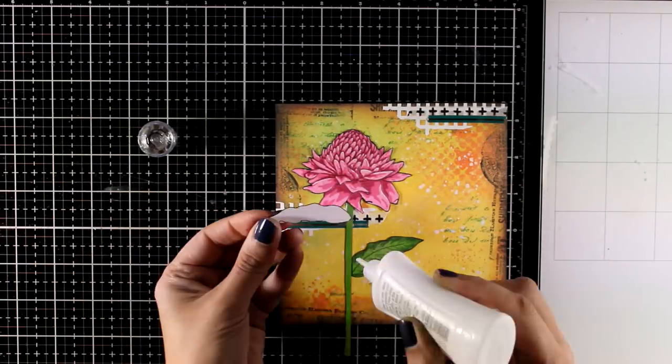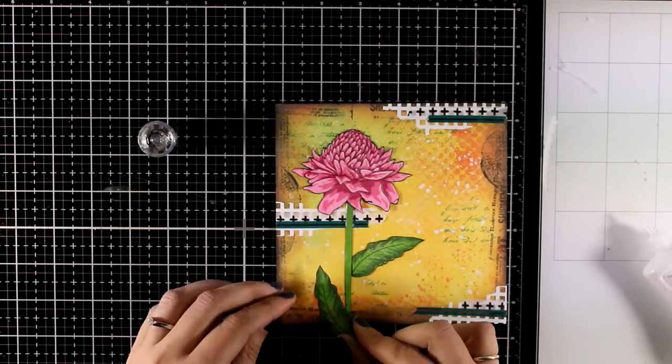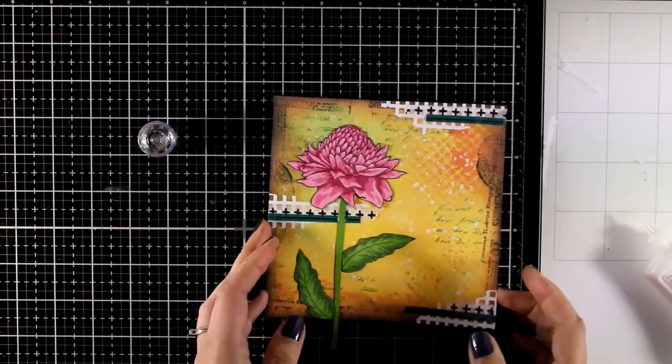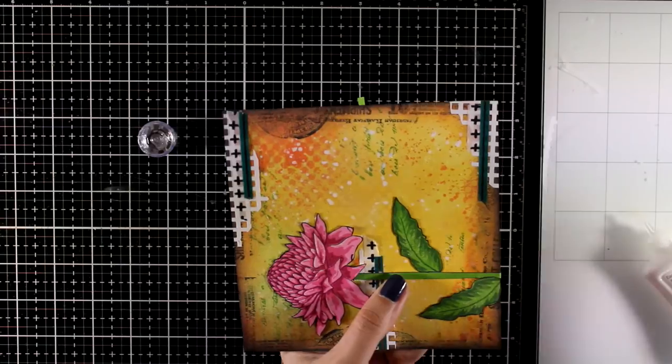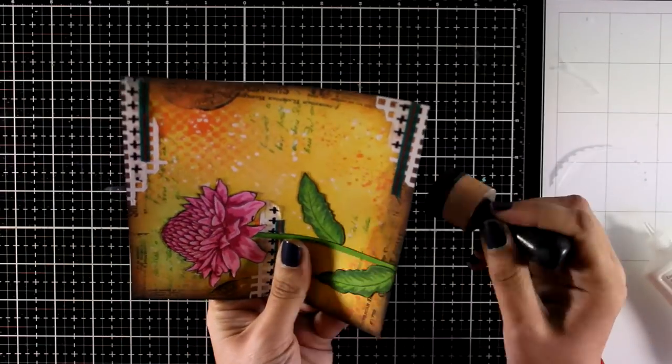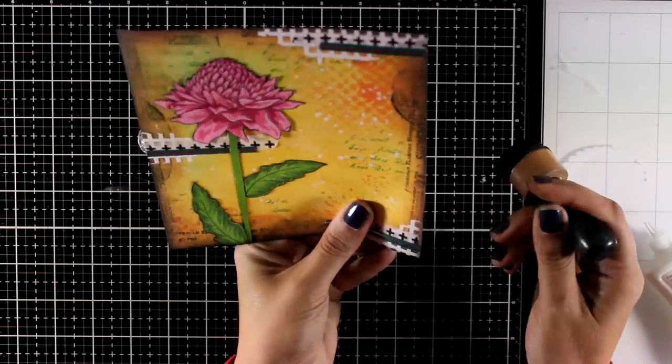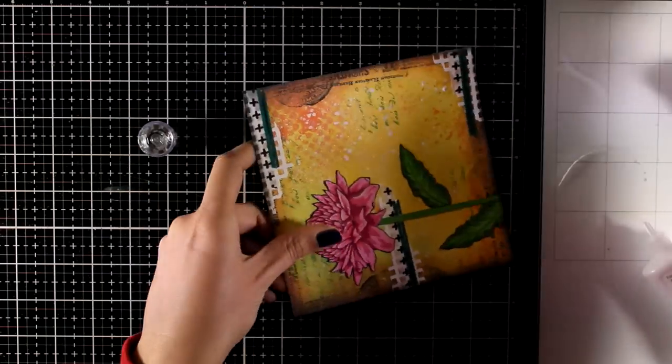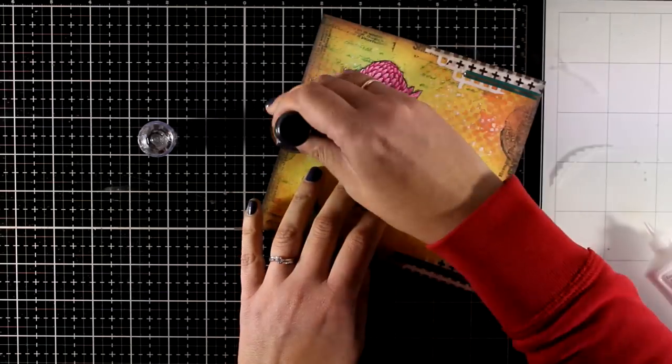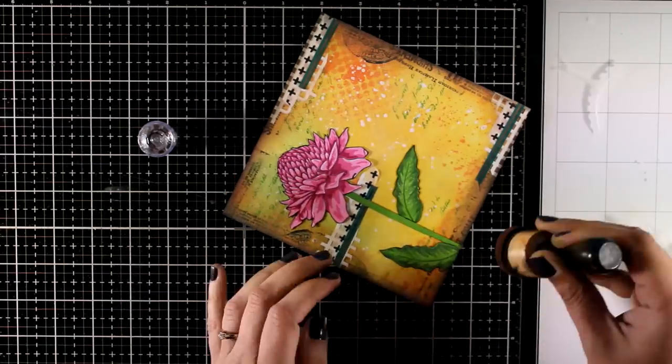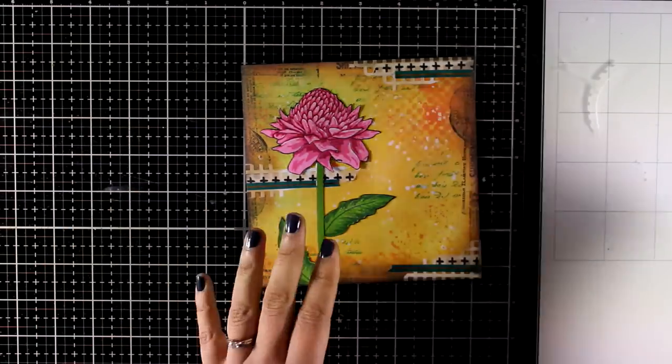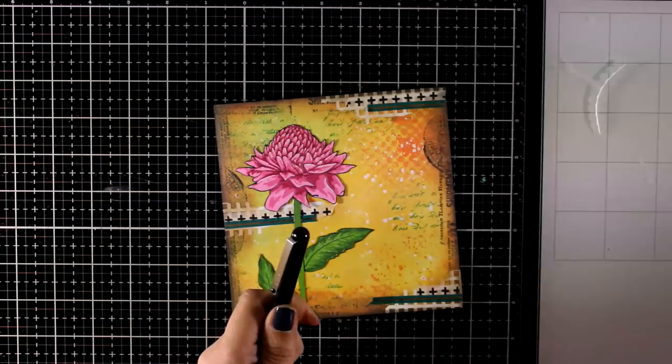Now I'm sticking down the stem and the leaves. Remember that the leaves are identical, but the way you place them down they'll look completely different. With my blending tool I'm inking up the edges one more time so they don't stick as white as they are, going slightly over the white areas to tone them down a little bit.